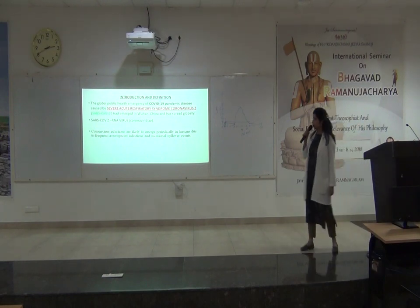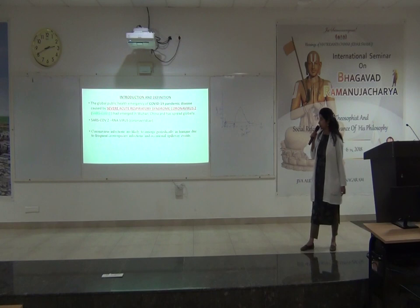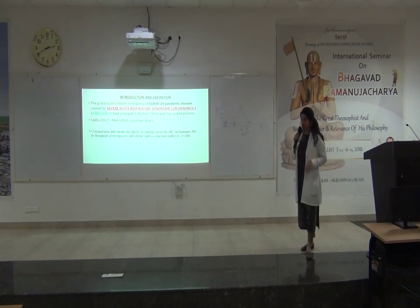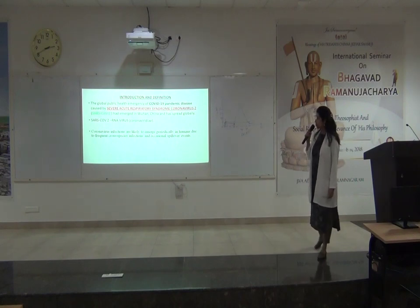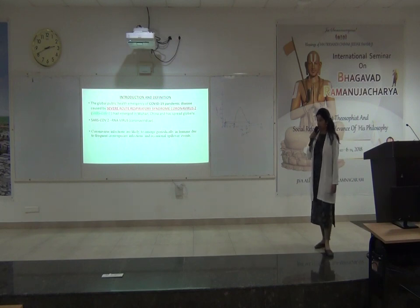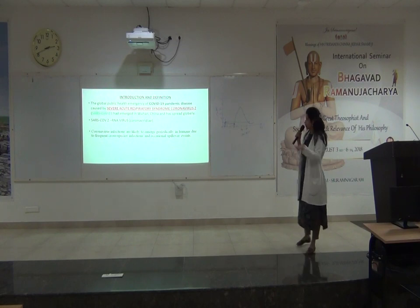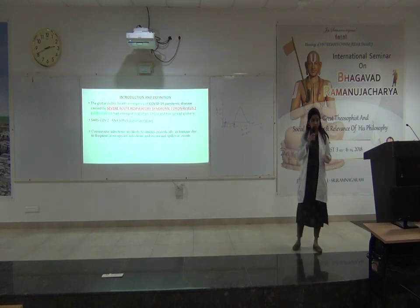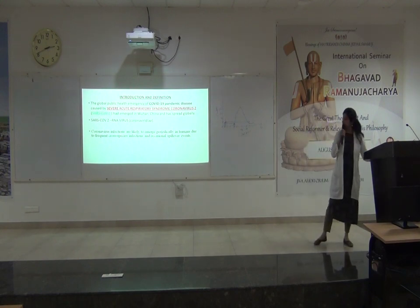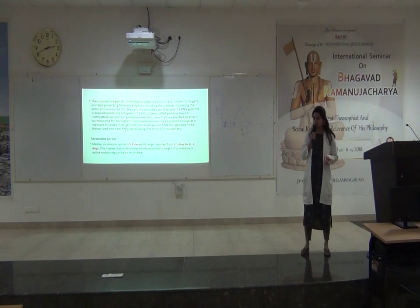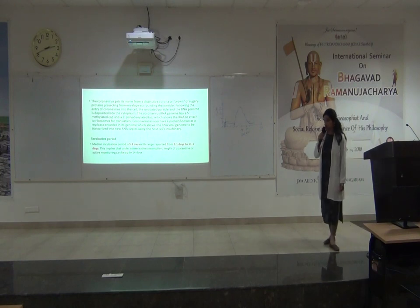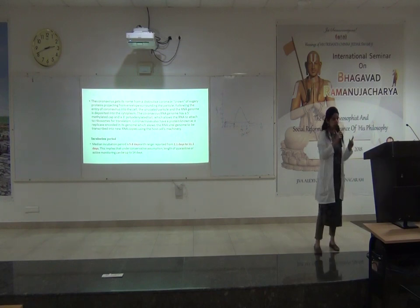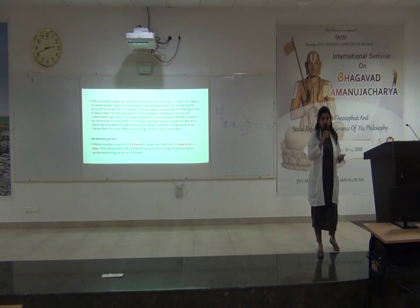COVID-19 is a global public health emergency. The virus is severe acute respiratory syndrome coronavirus 2 — an RNA virus. This is mainly because of human frequent cross-species infections. The median incubation period is 5.8 days, with a reported range of 2.1 to 11.1 days. The probable time of quarantine given was 14 days.